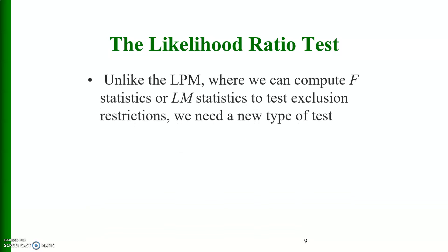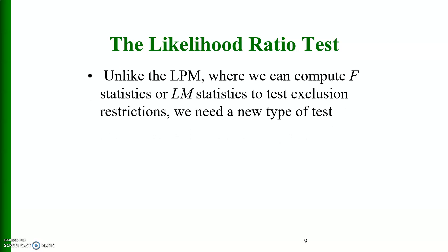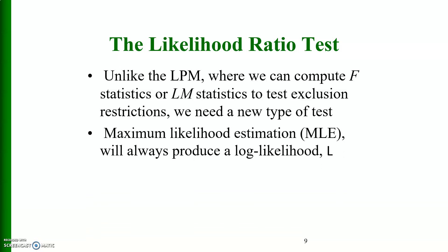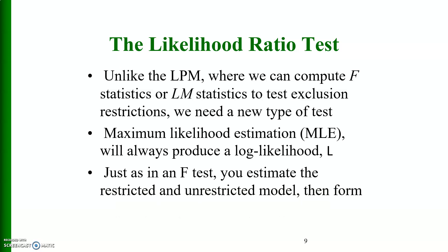The likelihood ratio test. Unlike the linear probability models where we can compute an F statistic or a Lagrange multiplier statistic to test exclusion restrictions, we need a new type of test. Maximum likelihood estimation will always produce a log likelihood test that is called L. Just as in F test, we estimate the restricted and unrestricted model. Then we form LR is equal to 2 times log likelihood unrestricted minus log likelihood restricted as a chi square distribution with q degrees of freedom.